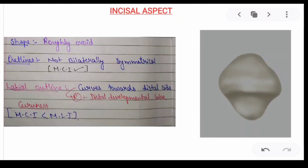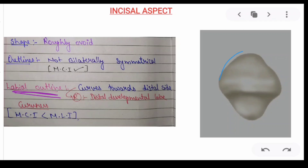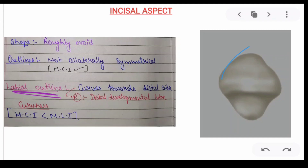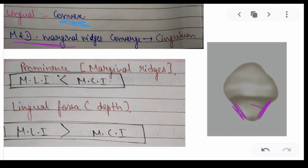Coming to the incisal aspect: only the crown is visible, not the root. In the mandibular central incisors, the outlines are bilaterally symmetrical. However, the labial outline of the mandibular lateral incisor is curved towards the distal side, and the reason for this is the distal developmental groove present on that side.